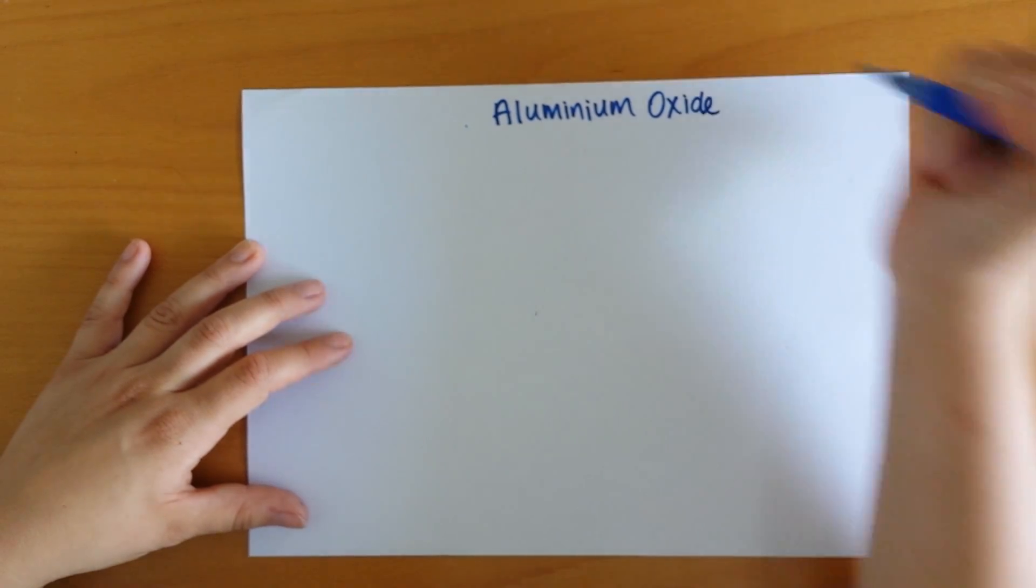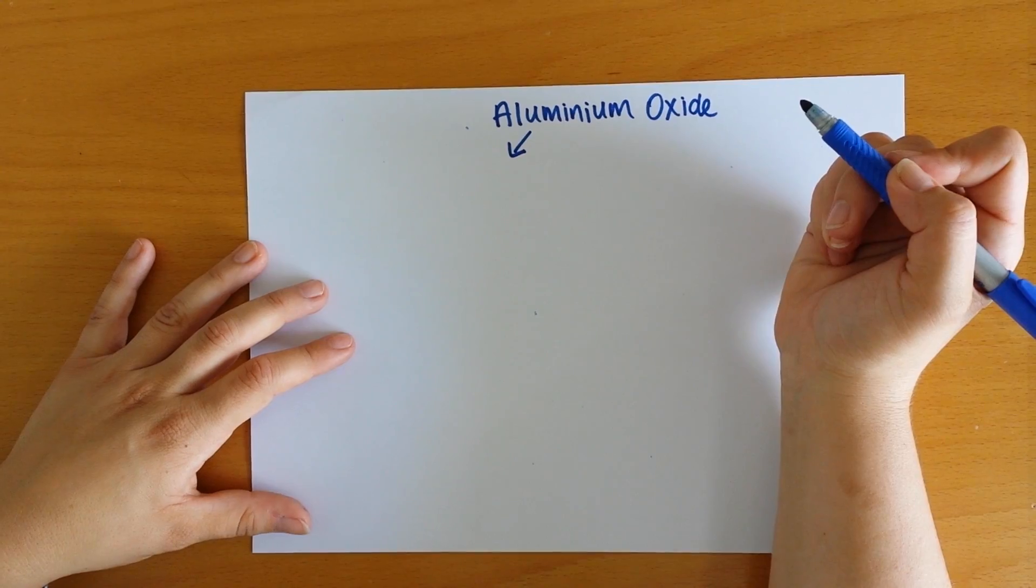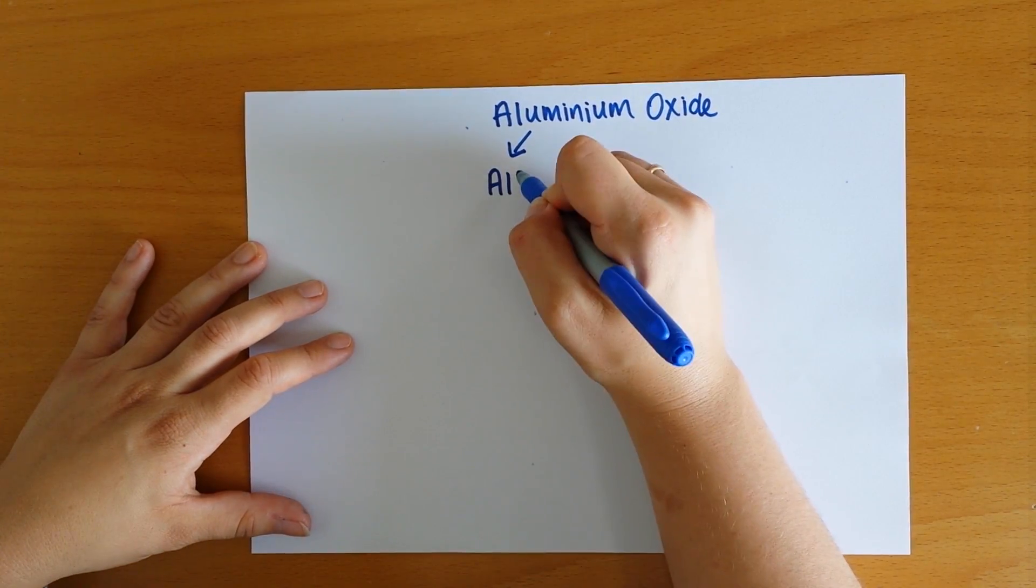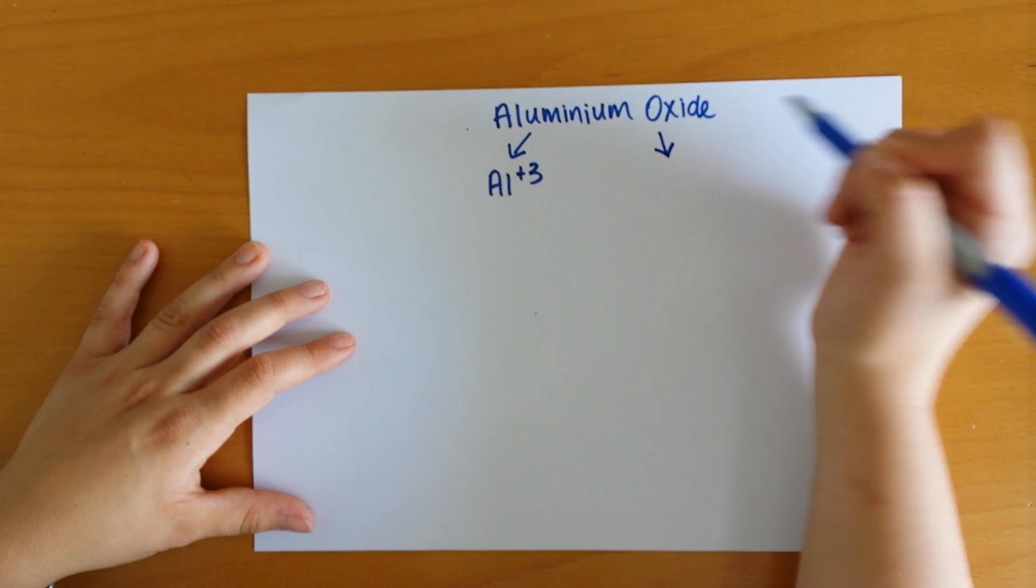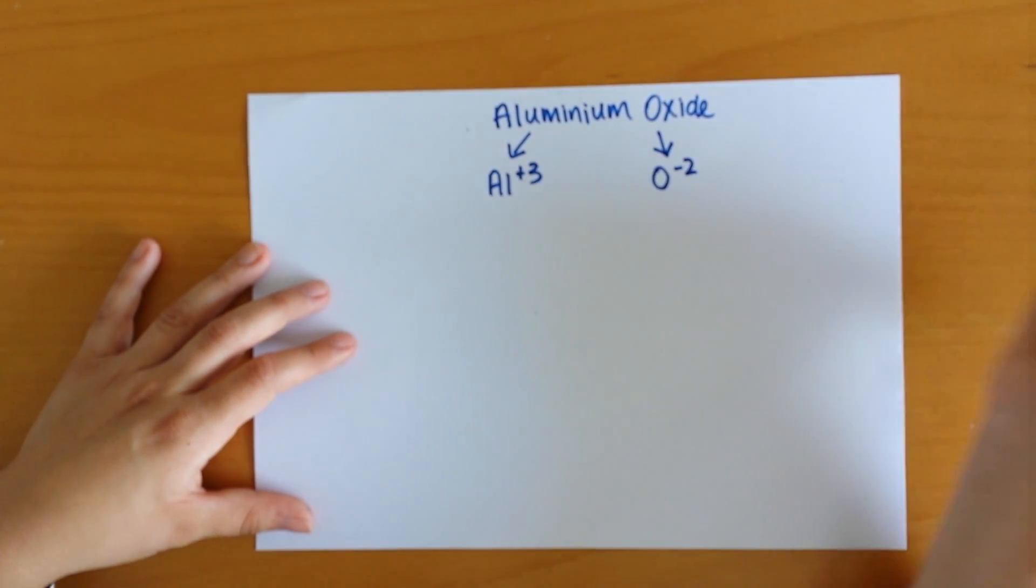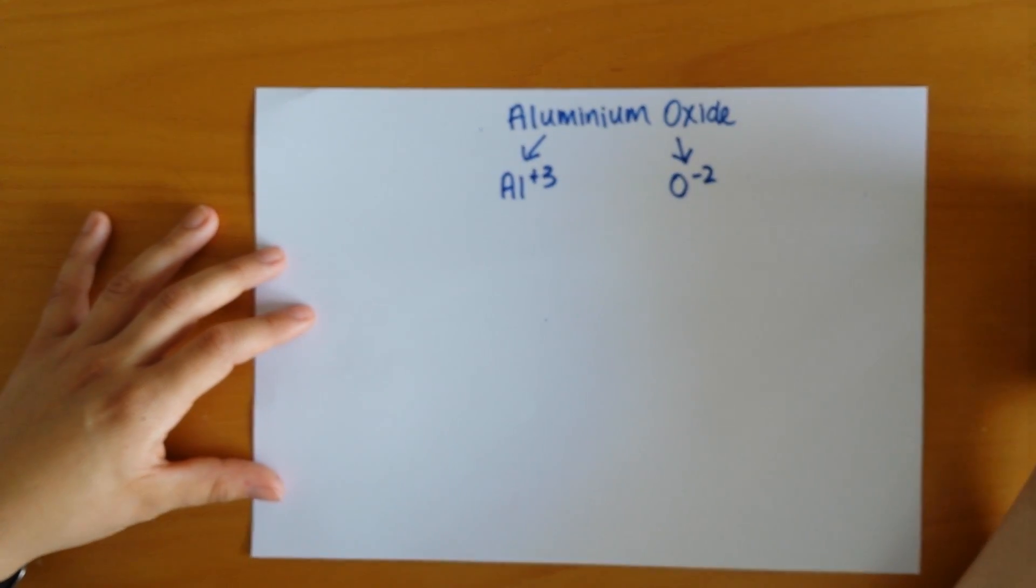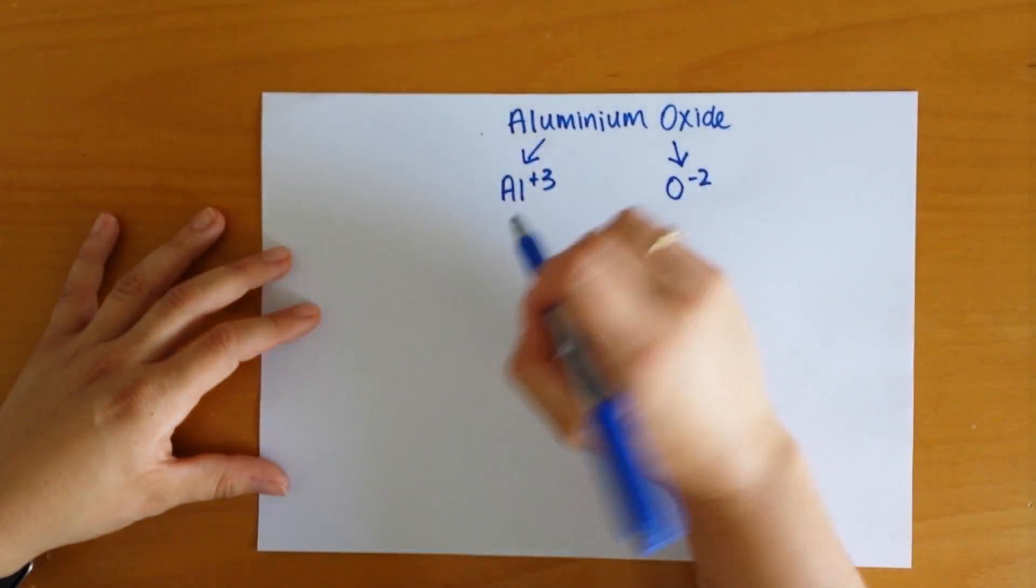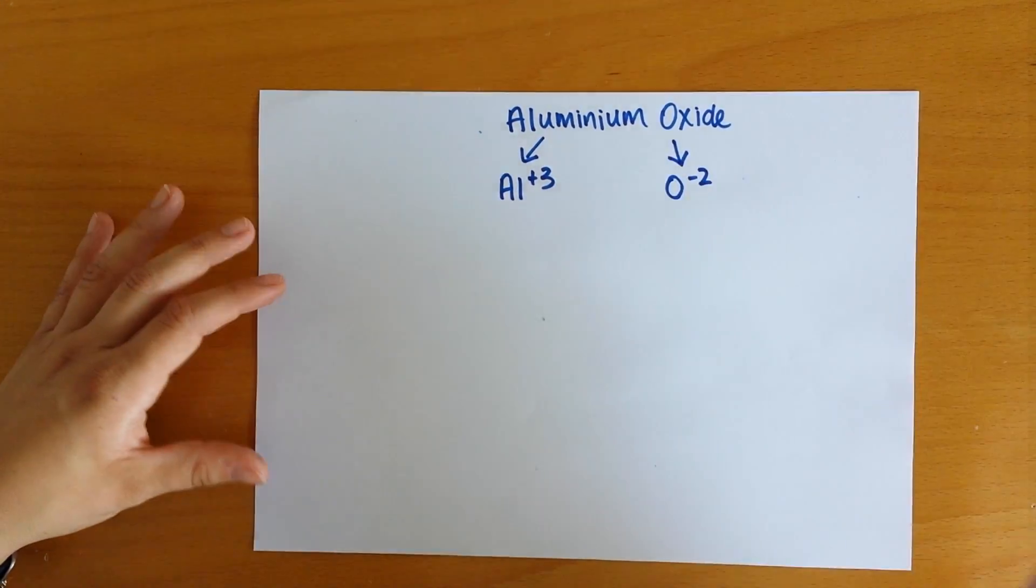Aluminum is from group 13, so that has a plus three charge. Oxide comes from oxygen, which is in group 16, and that has a minus two charge. Now when you look at this, it's not readily apparent how many equivalents of oxygen or the ratio of aluminum to oxide that you'll need.